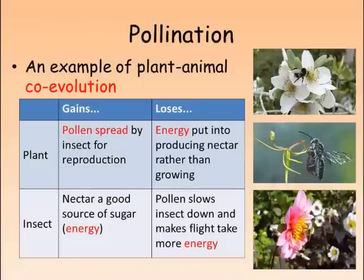A large number of plants rely on insects and other animals to pollinate them. This is an example of what's known as co-evolution. Insects and plants have evolved together, constantly adapting and changing in response to each other. Insects are attracted to flowers in order to feed on the nectar offered by the plant. In return, they brush against the parts of the flower, releasing pollen and transporting it to the next flower they visit.